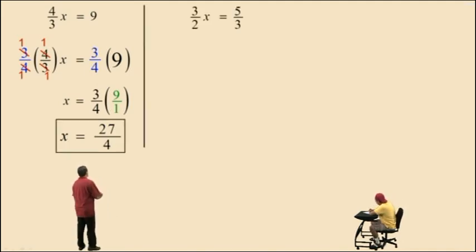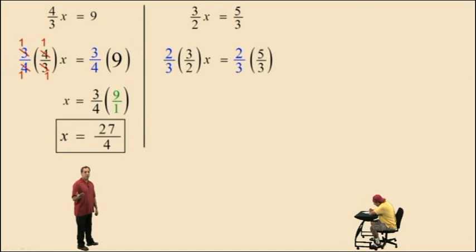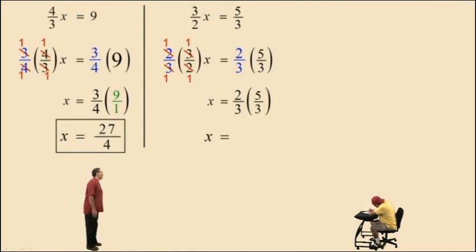Here, we have 3 halves x equals 5 thirds. Let's use the reciprocal method again, meaning to isolate that x, we're going to take 3 halves and multiply it by its reciprocal because that product will be 1. So 2 thirds times 3 halves, the 2s cancel out, the 3s cancel out, and it leaves you with 1x on the left-hand side. But remember, we had to multiply the other side by 2 thirds. So we have 2 thirds times 5 thirds, and we multiply straight across the top and straight across the bottom, and that gives you 10 ninths for that answer there.